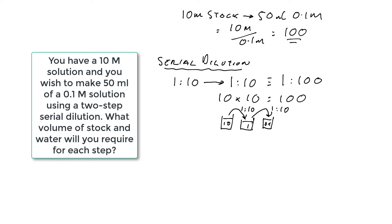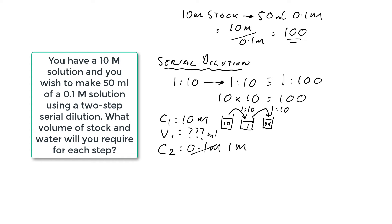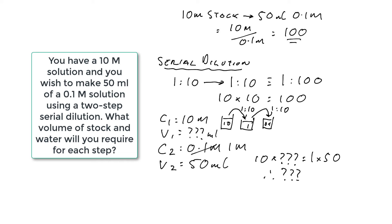Putting the values into C1V1 equals C2V2: C1 is equal to 10 molar, V1 is the volume we don't know, C2 is now equal to 1 molar for the first step, and V2 is equal to 50 mils. So 10 multiplied by V1 equals 1 times 50, therefore V1 equals 5 mils. This means we can take 45 mils of water and add 5 mils of our stock solution to give us 50 mils of a 1 molar solution.